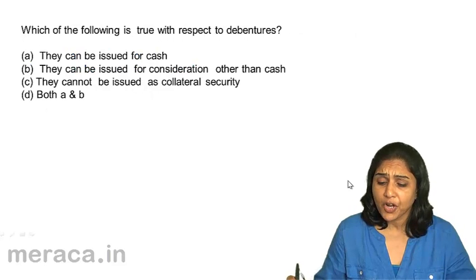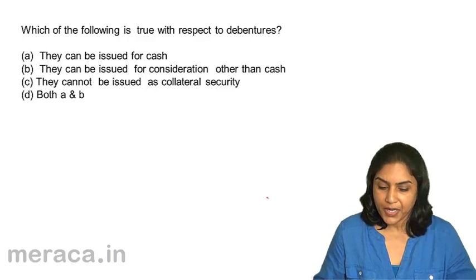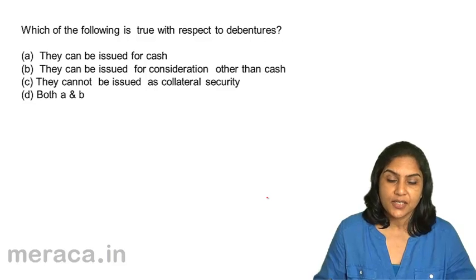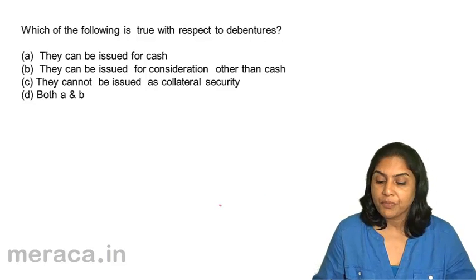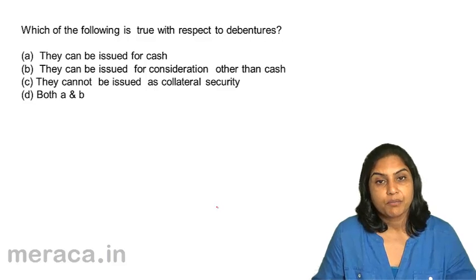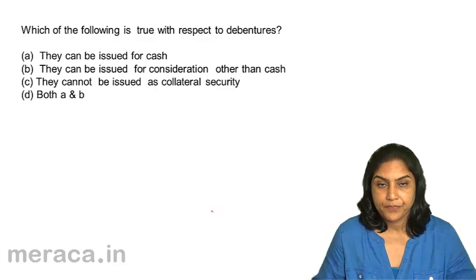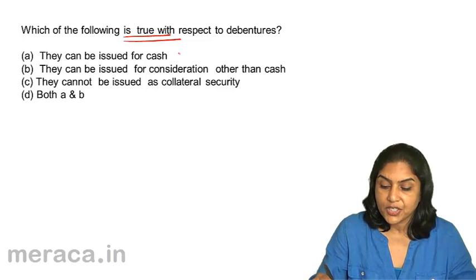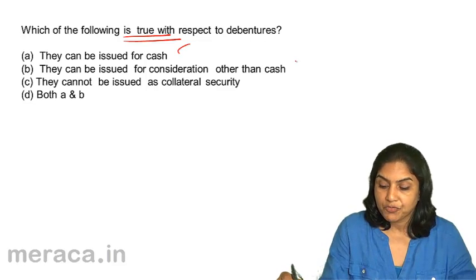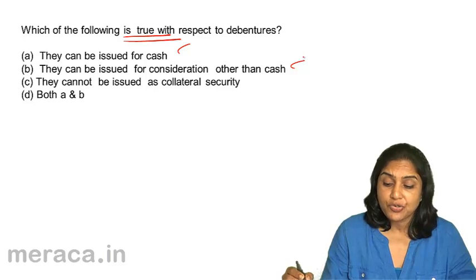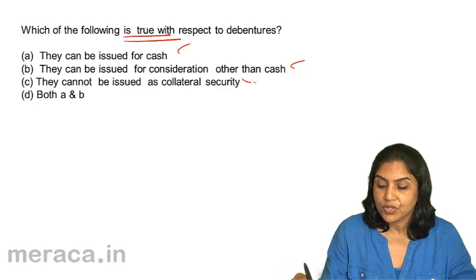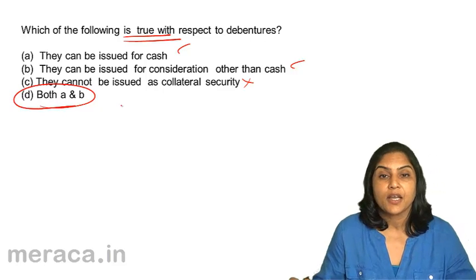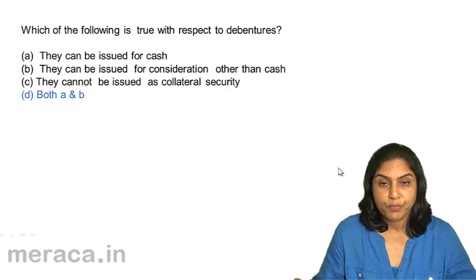Next, which of the following is true with respect to debentures? A: they can be issued for cash. B: they can be issued for consideration other than cash. C: they cannot be issued as collateral security. And D: both A and B. Can they be issued for cash? Yes. Can they be issued for consideration other than cash? Yes. They cannot be issued as collateral security? Of course they can — so C is wrong. Therefore, the answer is D: both A and B.